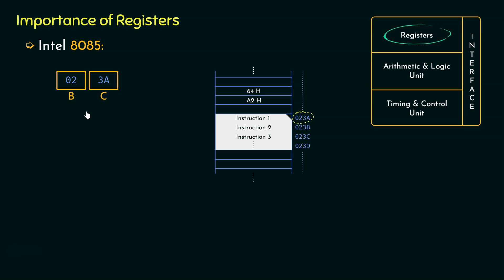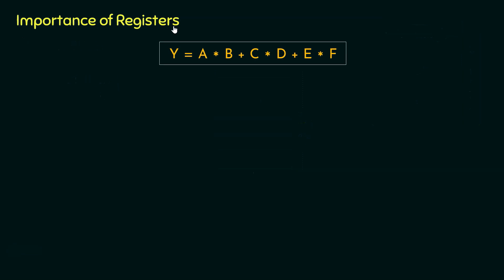There might be two cases: either we would like to store data, which is of 8 bits, or we may need to store addresses as well, which are of 16 bits. Now why the registers are used should be clear — they are used to store data, addresses, as well as instructions. Let's now understand the importance of registers in greater detail.